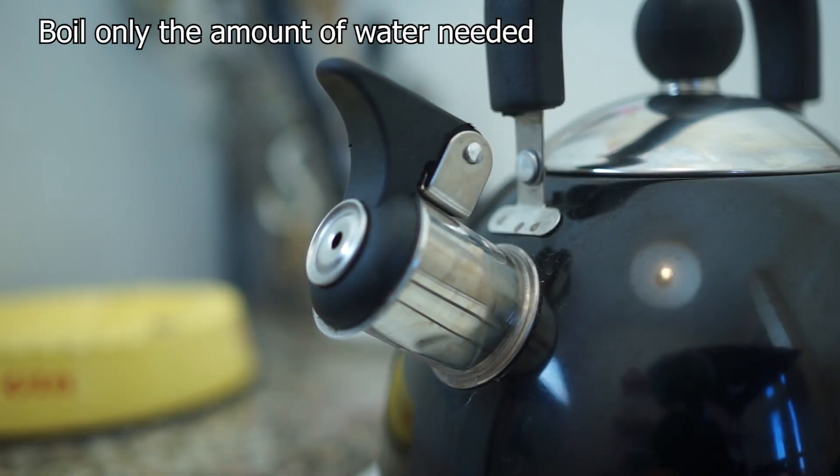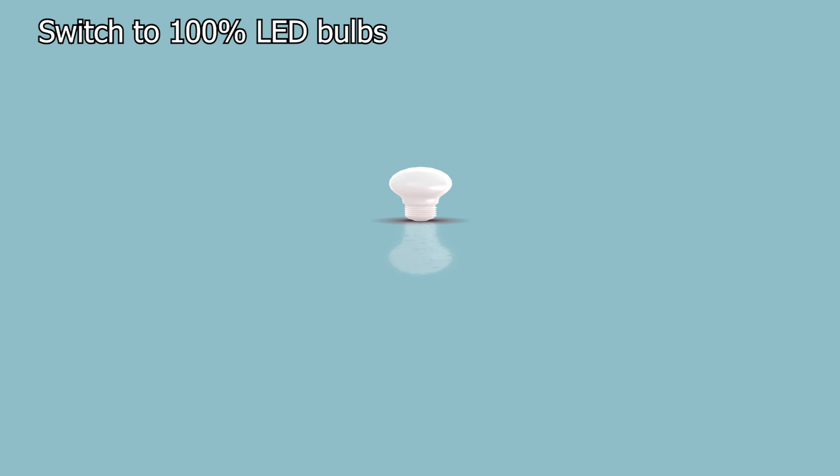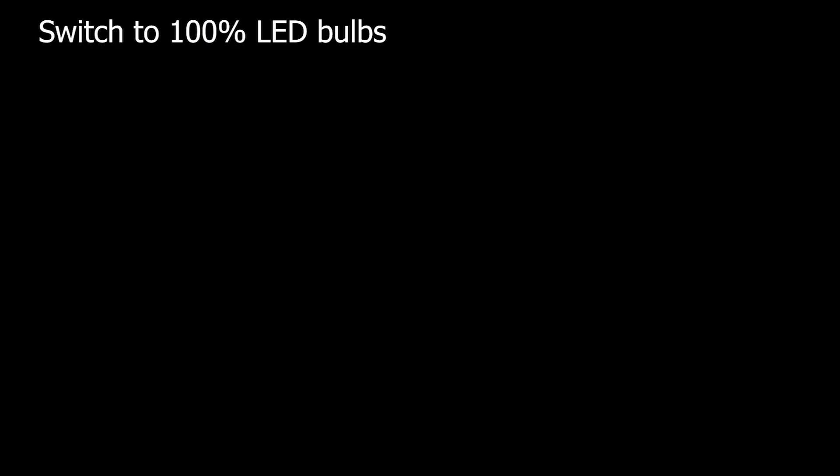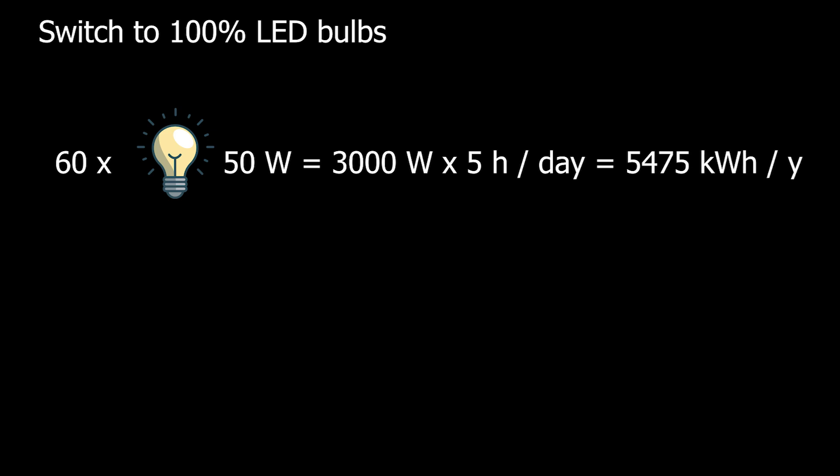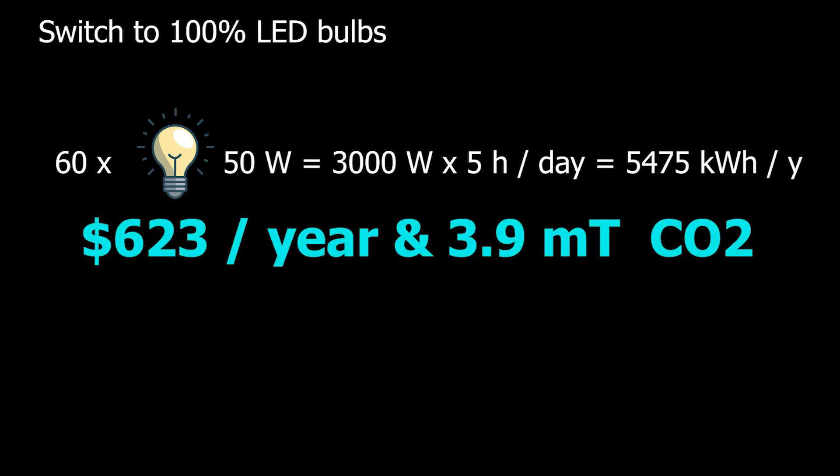All your lights in your home LED high efficiency bulbs? No? Change them now. When I moved to our current home, the previous owner had about 60 50-watt bulbs in the fixtures. This is 3,000 watts. If they were on, say, five hours a day, that would be 5,475 kilowatt hours a year. Where we live, this would cost us $623 and produce 3.9 metric tons of carbon dioxide. That's about what a small car produces in one year of travel.